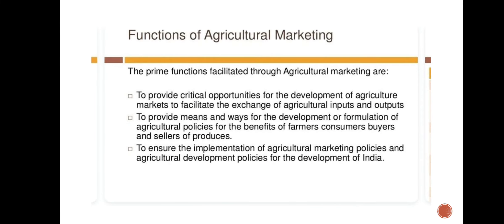Functions of agricultural marketing: The primary functions are to provide critical opportunities for the development of agricultural markets, to facilitate the exchange of agricultural inputs and outputs, to provide means and ways for the development of farmers, agricultural policies for the benefits of farmers, consumers, buyers and sellers of producers, and to ensure the implementation of agricultural marketing policies and agricultural development policies for the development of India.